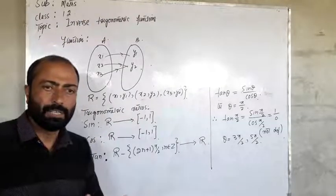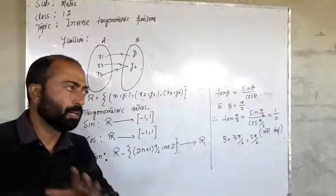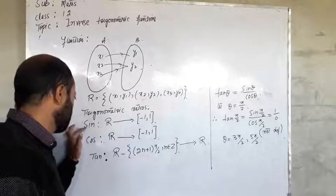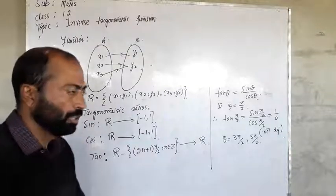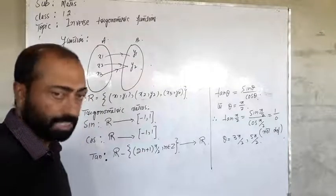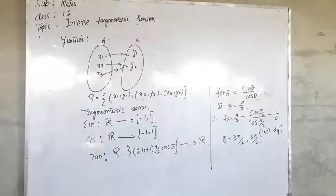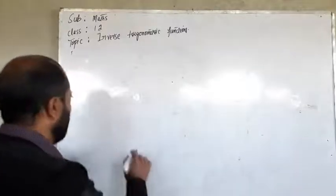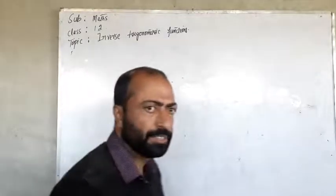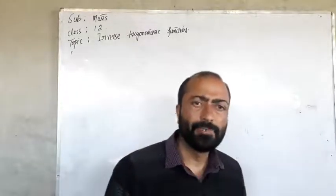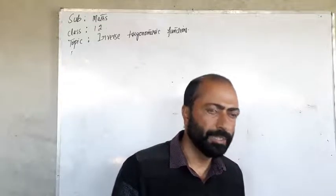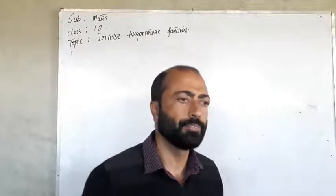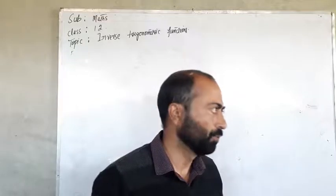What is the domain of cosec, sec, and cot functions? Now, as you are aware, a function is said to be invertible if it is bijective — that means it should be both one-one and onto.